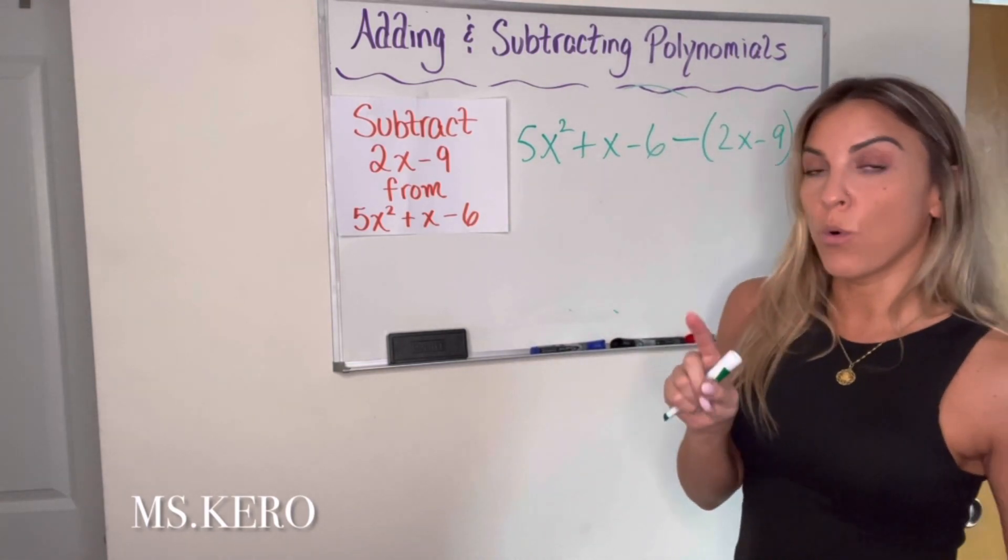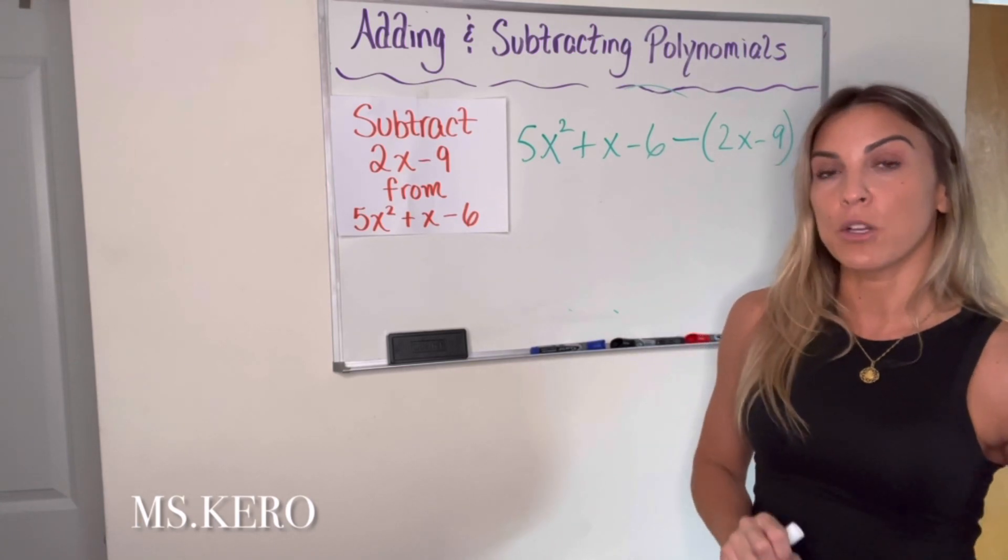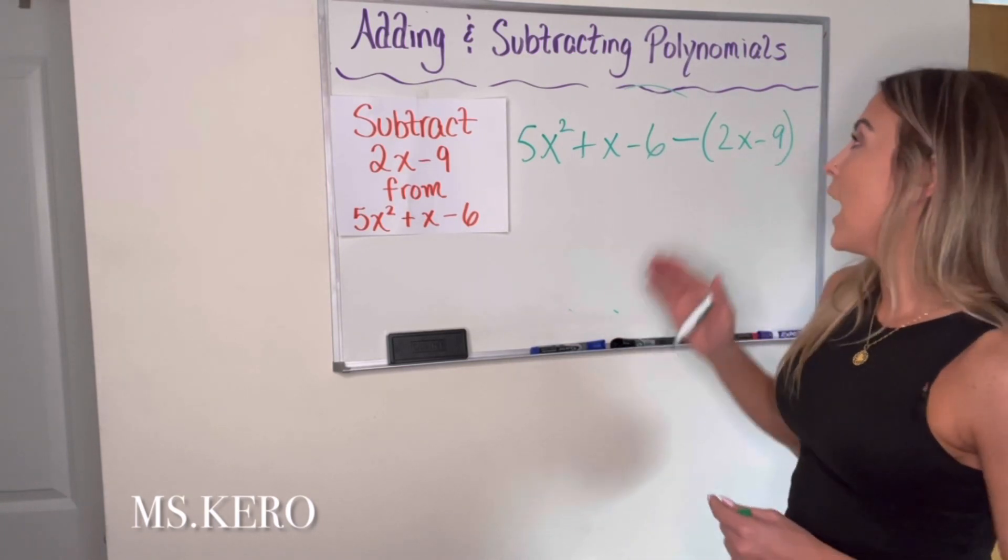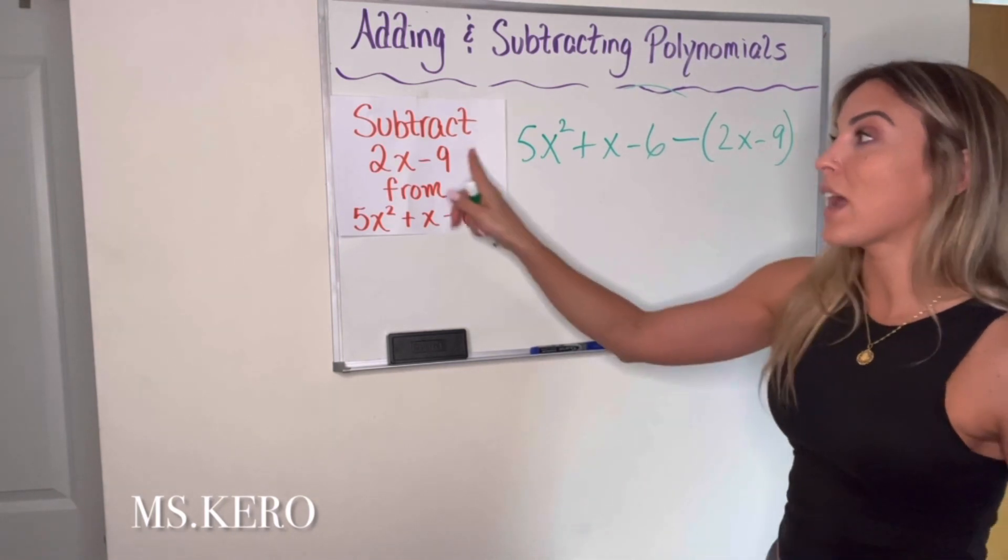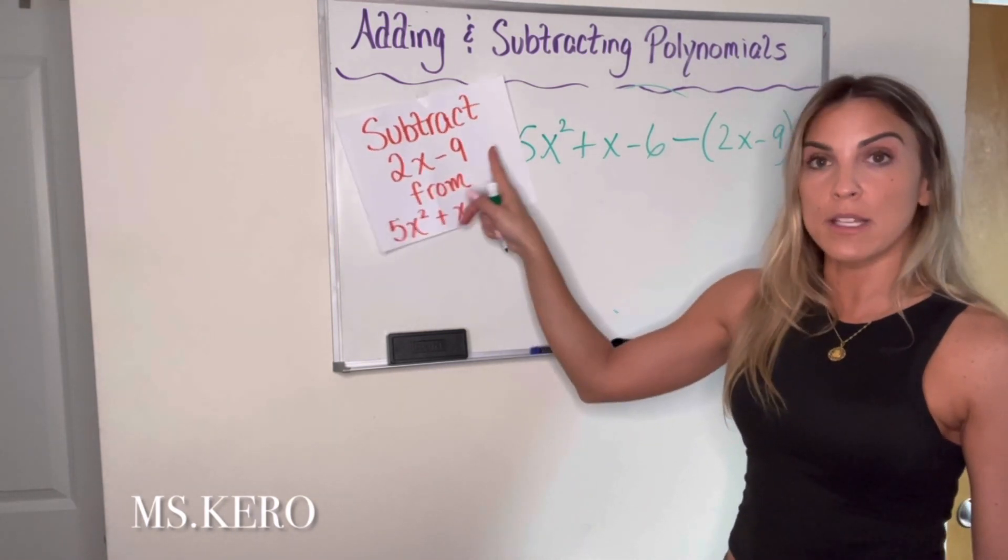Two important things. One is the order. Two is the fact that the second expression has to be in parentheses. If it wasn't, I would just be subtracting the 2x, right? But it's saying subtract this whole expression, 2x minus 9.